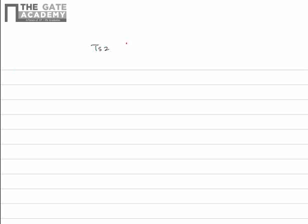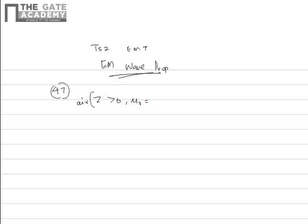This is for Test Series 2, Electromagnetic Theory, and the topic is electromagnetic wave propagation, question number 47. The plates separate air and iron. It is given that for air, Z is greater than zero, and for iron, Z is less than zero, and mu_r is equal to 20.